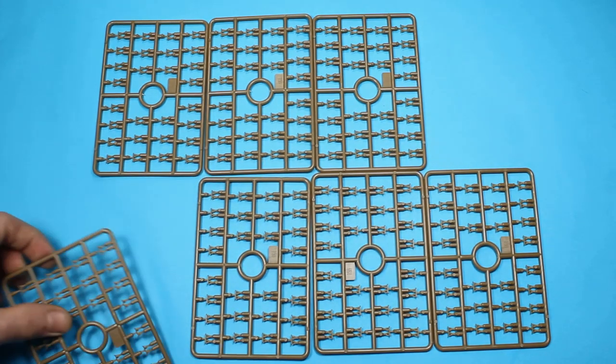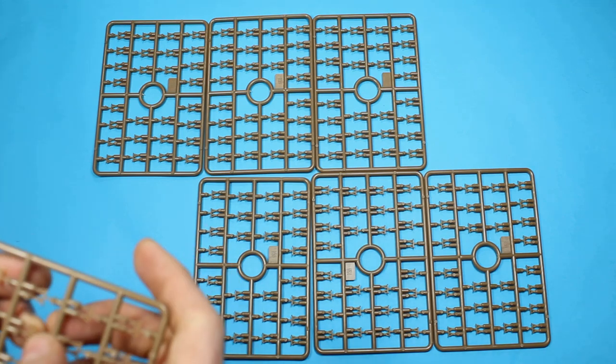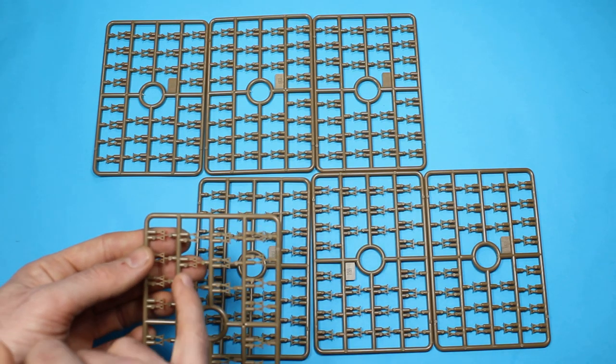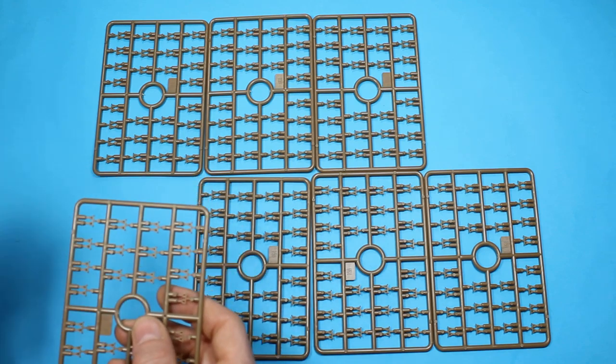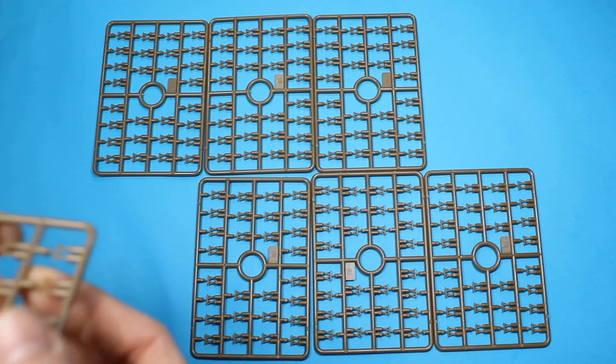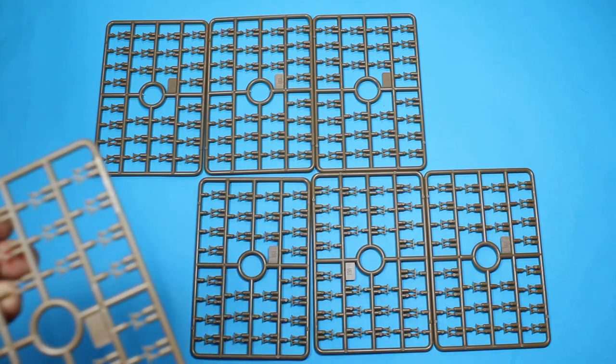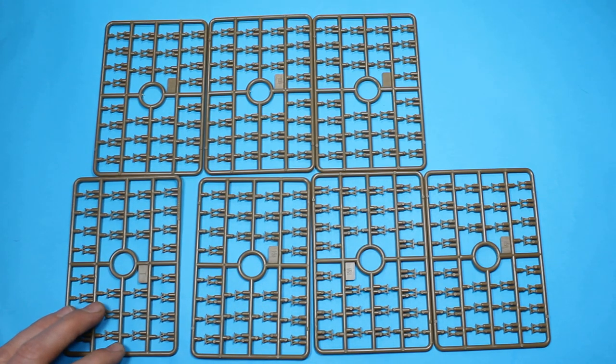Very small tracks, but they only have three points to take off the sprue, none on the actual face. They're on the ends of the tracks with no ejector pin marks. There's good detail on the guide horns. It's just a case of cutting them off, snipping off, and gluing them together.